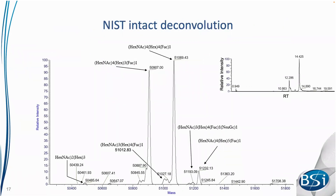We first performed LC-MS analysis to identify the major glycoforms. Shown here is the heavy chain of the NIST monoclonal antibody — only the heavy chain is glycosylated at one site in the constant region. Peaks correspond to the mass of the heavy chain associated with specific glycans, and we can match a number of peaks with their glycan compositions.